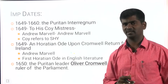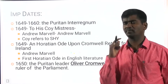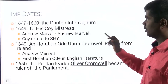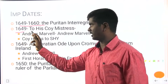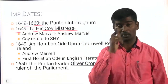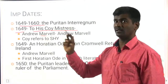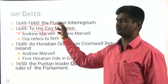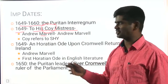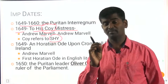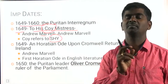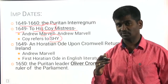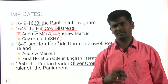Important dates with regard to the Puritan or the Commonwealth age — 1649 to 1660. 'To His Coy Mistress' is a very important poem written by Andrew Marvell. In the NET examination there was a bit: in the poem 'To His Coy Mistress,' 'coy' refers to shyness — shy. The meaning of 'coy' was given in the history of NET examination a couple of times.